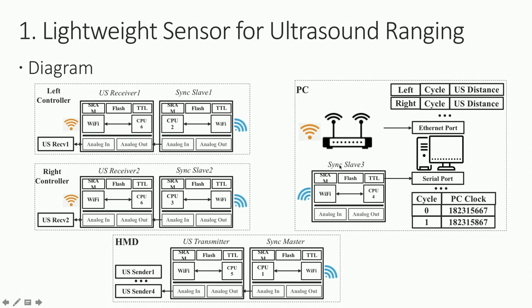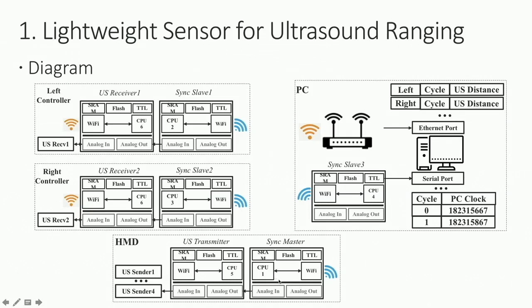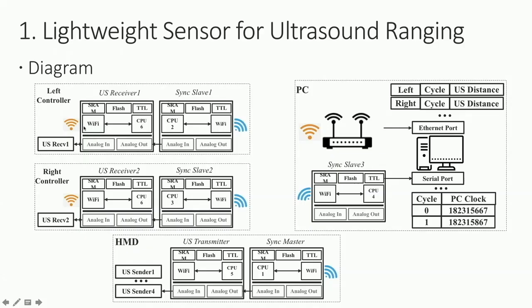There is also a synchronization slave on the PC side. We read data through the serial port and use this processor to link the PC clock with the cycle time — this is how we match the controller board time with the ground PC clock. The sync slave is used purely for time synchronization via WiFi. Since the receiver uses a WiFi module to send out UDP, we separated these into two processes to avoid interference.